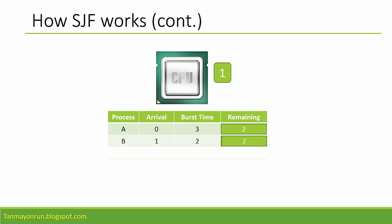At the next second, Process B arrives with 2 seconds of burst time. Now Process A and Process B both have 2 seconds remaining, but since Process A arrived before Process B, the CPU takes 1 second from Process A. At 2 seconds, Process C arrives with 1 second of task. Process A and Process C both have 1 second remaining, but Process A gets priority because it arrived earlier.